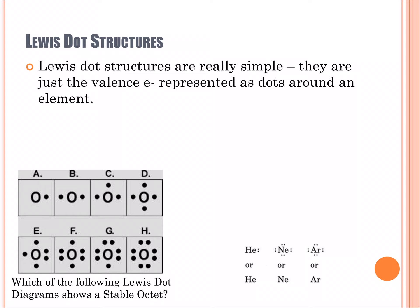Lewis dot structures really simplify things for us by allowing you to focus on how many electrons are there outside. We can focus on how many electrons something wants to get or potentially get rid of. Helium, you'll see, has two valence electrons, so we tend to draw the electrons in pairs.